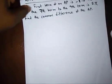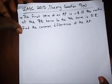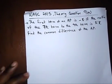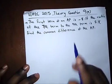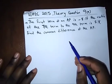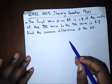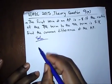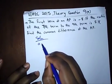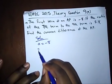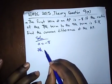Our next question is a theory question: find the common difference of an AP whose first term is -8, if the ratio of the 7th term to the 9th term is 5 to 8. First term is -8. Our 7th term would be a + (7-1)d.